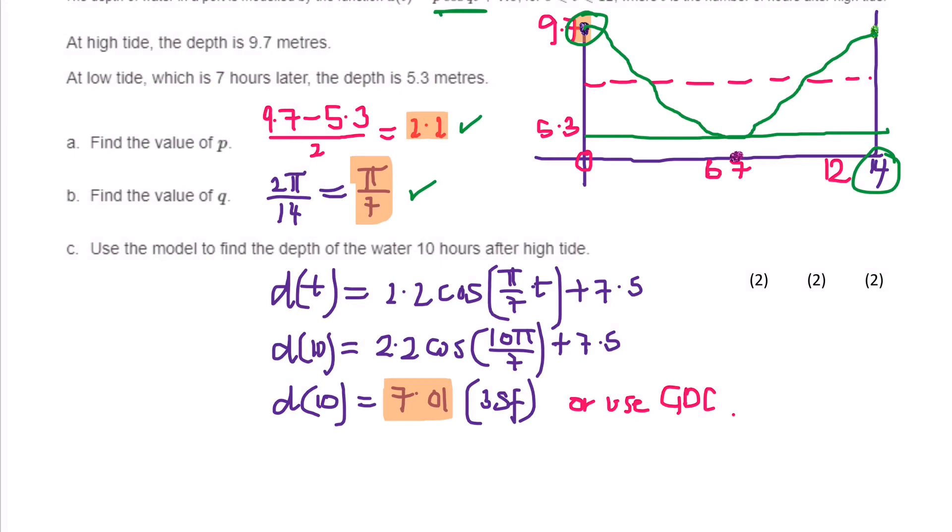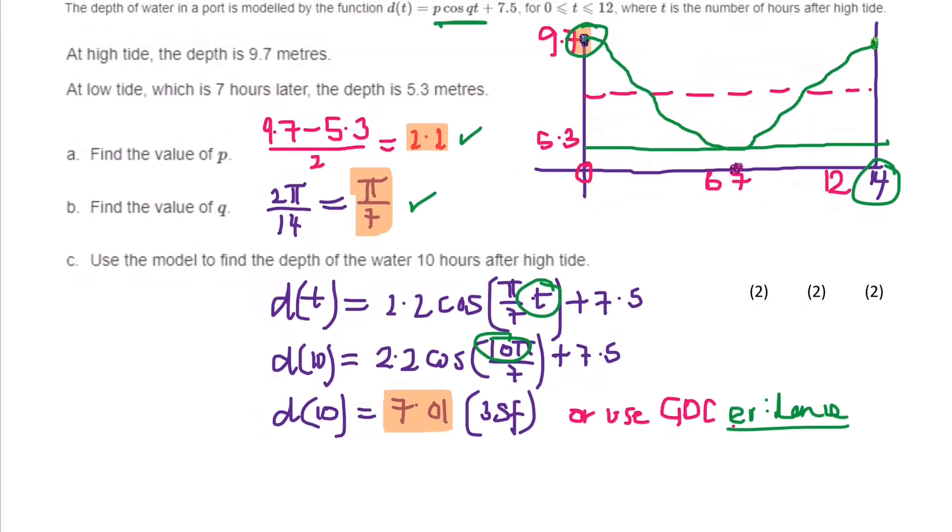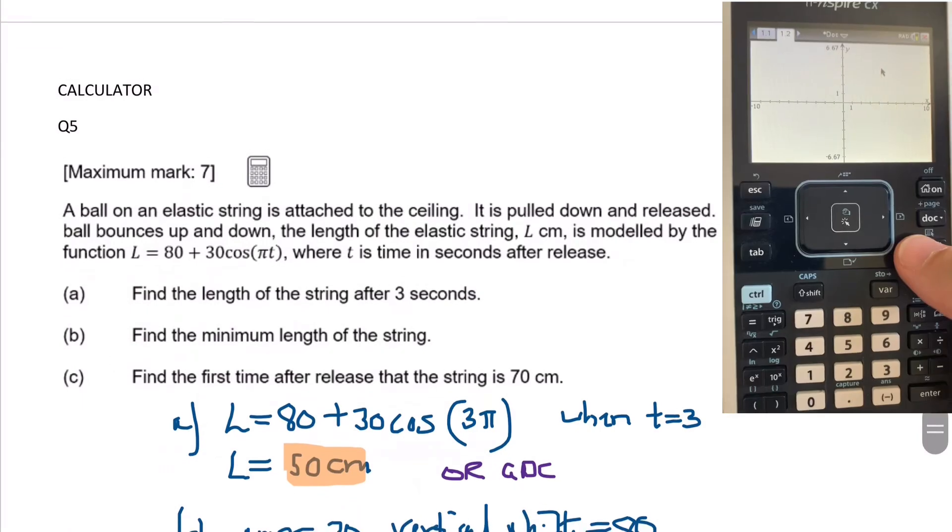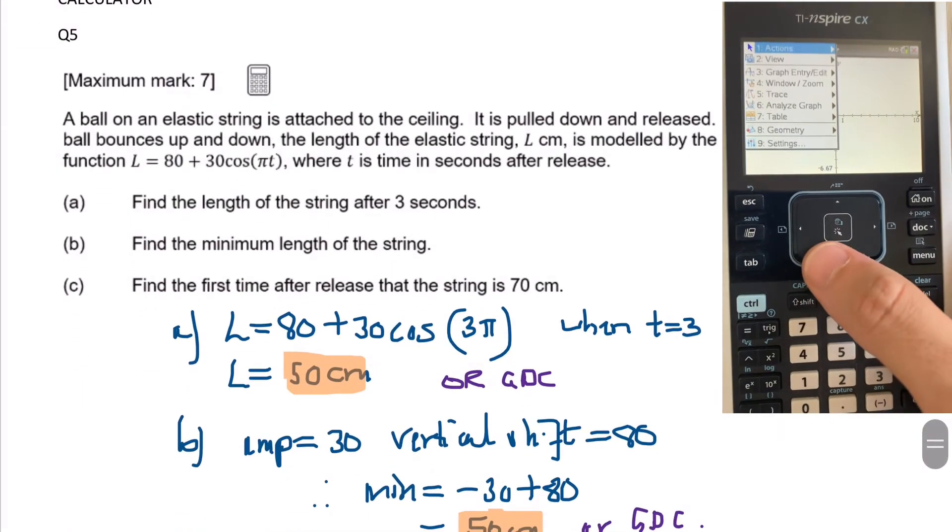Then use the model to find the depth. So you could either put this into your GDC and show me evidence from the GDC that you've done it, or just plug it into the formula. So all I did was put 10 in for T, and just pop that into the calculator, and you get 7.01 to 3 significant figures.